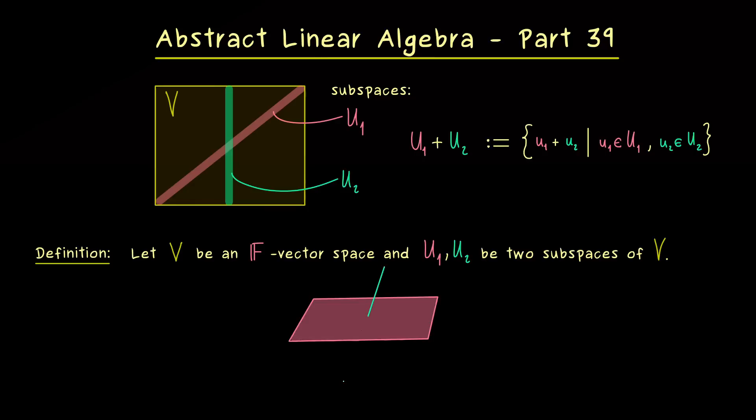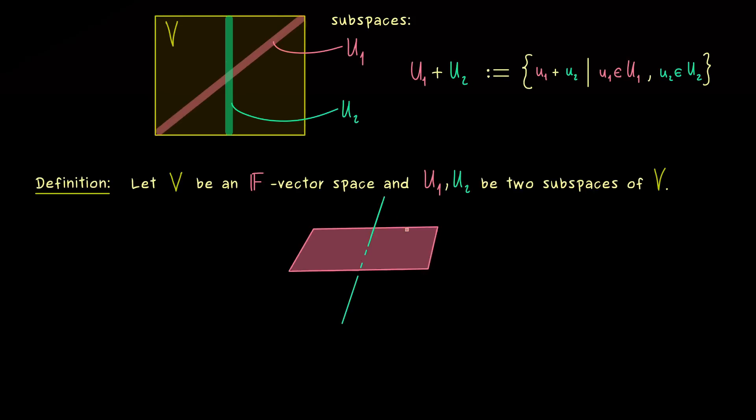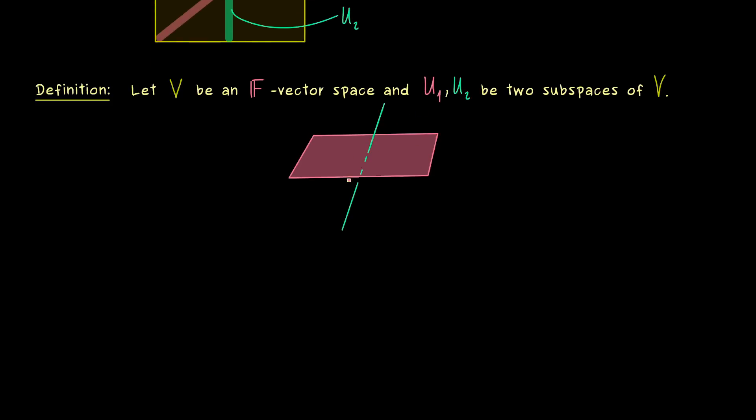And there it's important to remember that we always have a non-empty intersection, because the zero-vector lies in both subspaces. And indeed, in this definition, we only want to consider this case, that the intersection is exactly only the zero-vector. In a rough way, you could say that the two subspaces, U₁ and U₂, should be linearly independent.